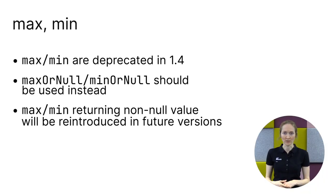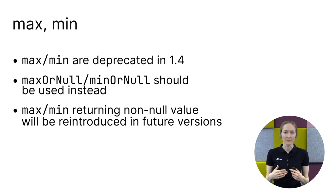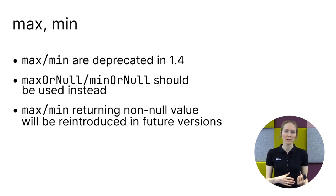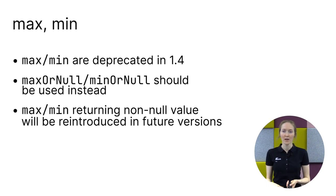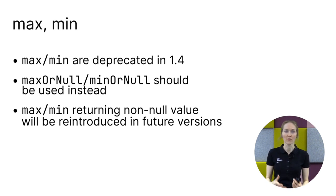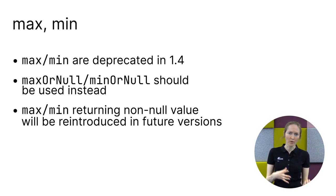Currently, the old min and max functions are deprecated with a warning. At a later date, they will be deprecated with an error, so you won't be able to use them at all. Sometime after that, the regular max and min will be returned to the standard library — but following the common convention, the new functions will return non-null values and throw exceptions if the collection is empty. We want to provide a very gradual transition. It will take several versions to reach the point where the library contains both max returning a non-nullable value and maxOrNull returning a nullable value.